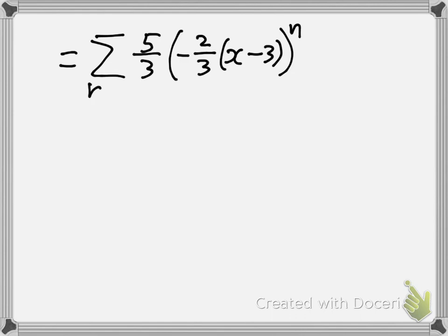You must have absolute value of r less than 1 in order for that a over 1 minus r to become a series.